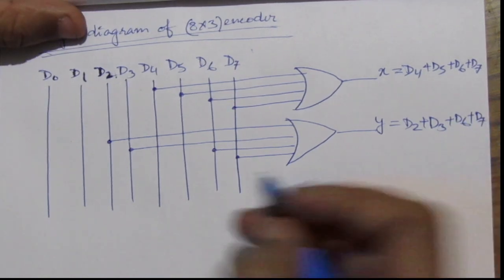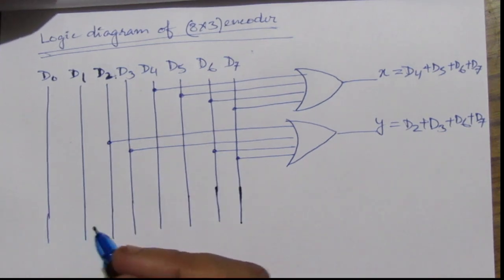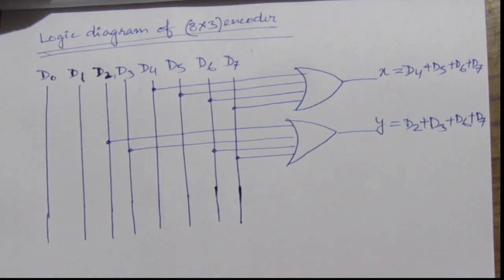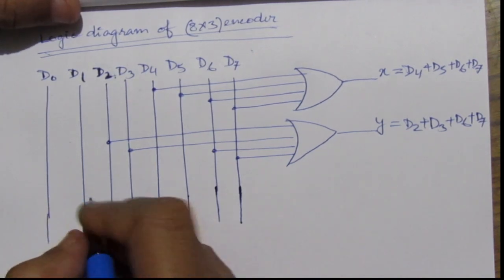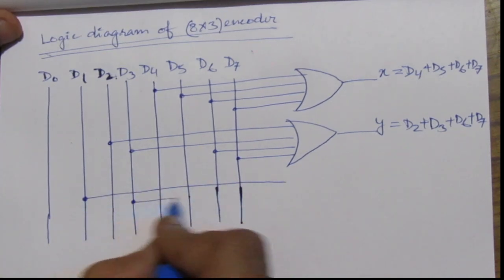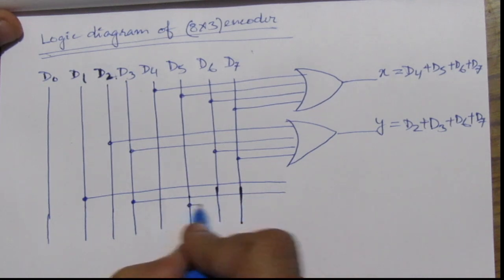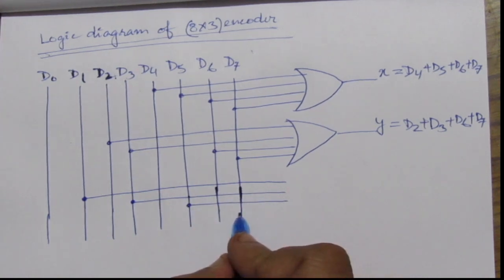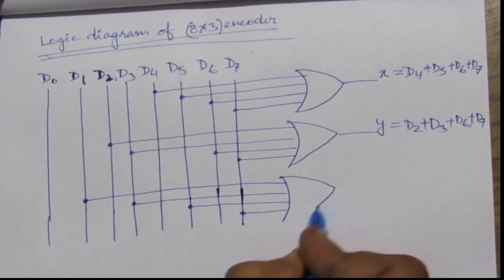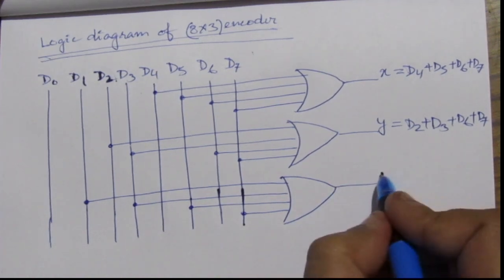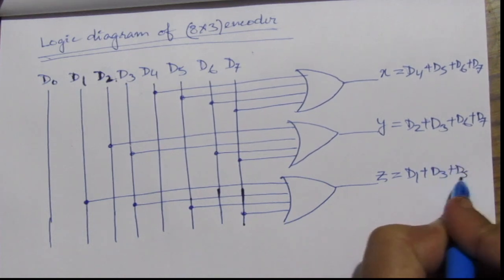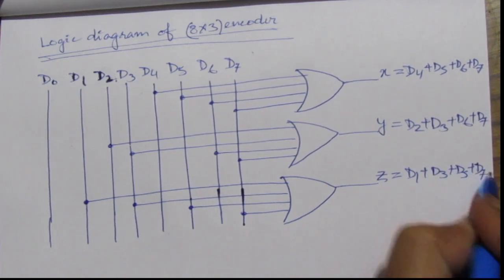Now we will see the expression for z. For z we have d1 plus d3 plus d5 plus d7. So, d1 plus d7 and we have d1 plus d5, d7. We have to do a OR operation. And we will get this expression for z equal to d1 plus d3 plus d5 plus d7.